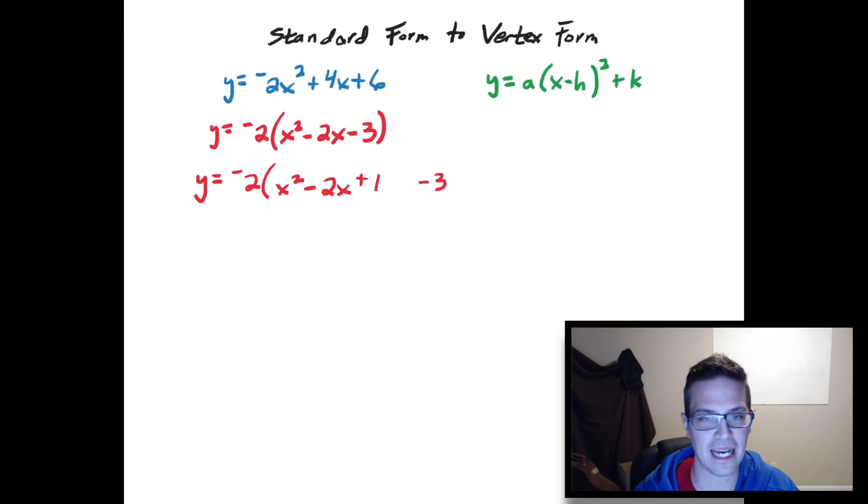Now because I added a positive 1 there, I need to counteract that in order for this equation to still be equal to what it was. So since it's a plus 1 here, I'm also going to have a minus 1 here. And then I'm going to close the parentheses right there. So this plus 1 and this minus 1 technically do cancel out, but we're just using this plus 1 here to complete the square.